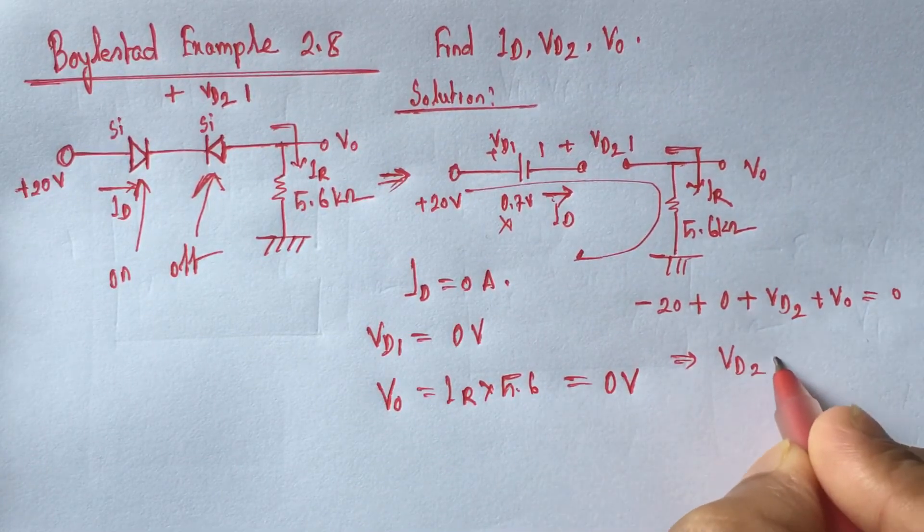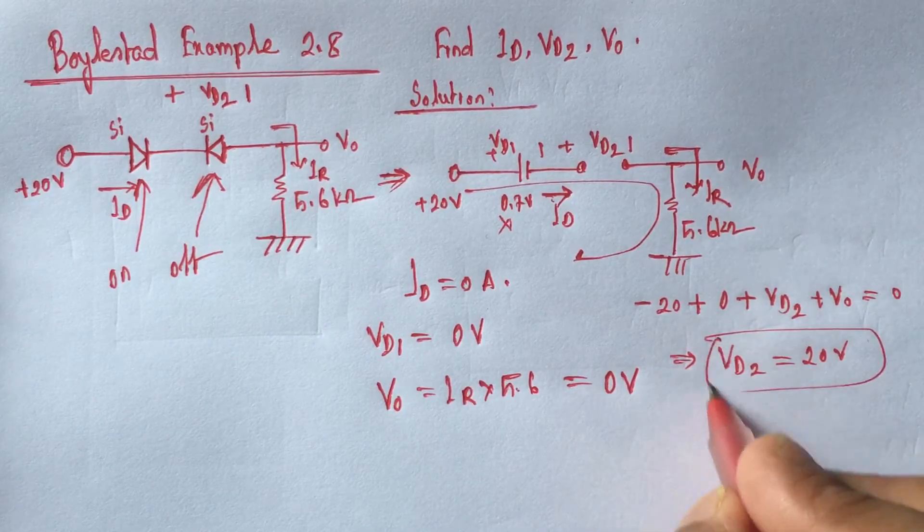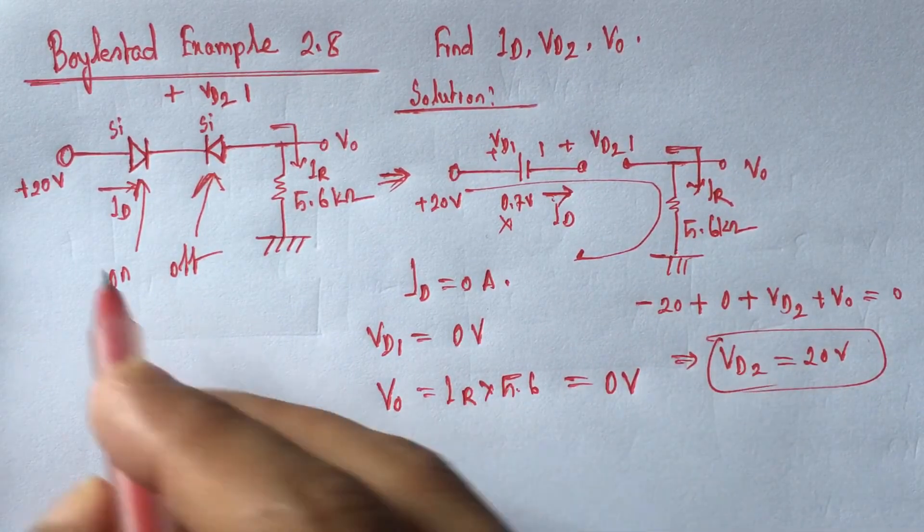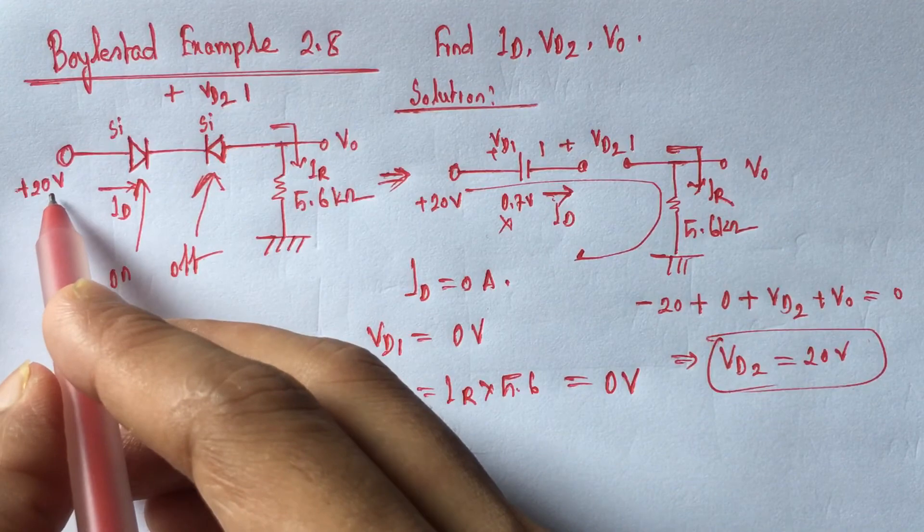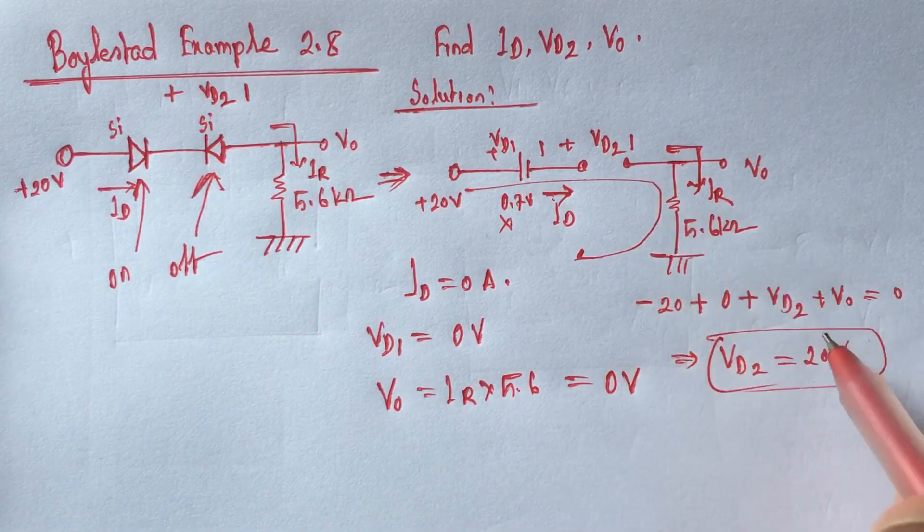VD2 is equal 20 volt, so the whole applied biasing voltage appeared across the diode which is open.